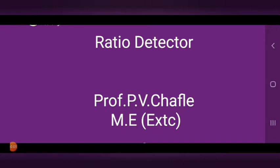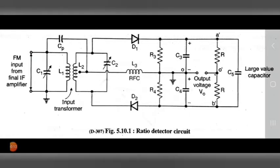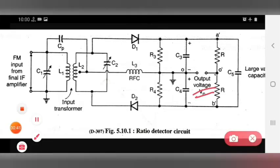Hello everyone. Today we see the topic that is Ratio Detector. See the diagram for ratio detector — the input is FM input from the final IF amplifier, and after that the input transformer is used. After that, diodes D1 and D2 are used, and at this point the output voltage V0 is obtained.